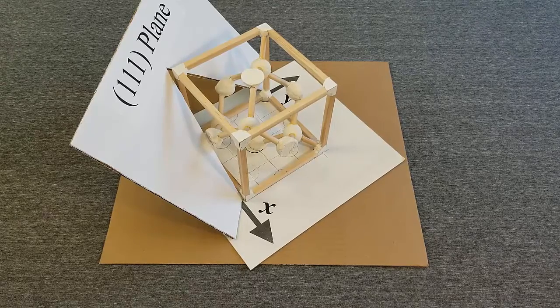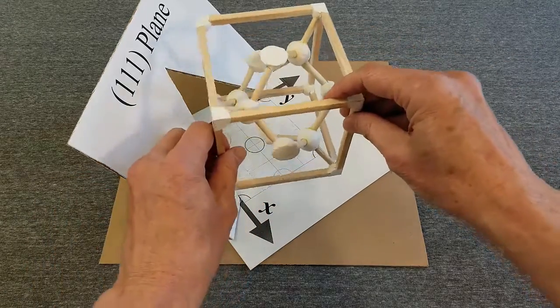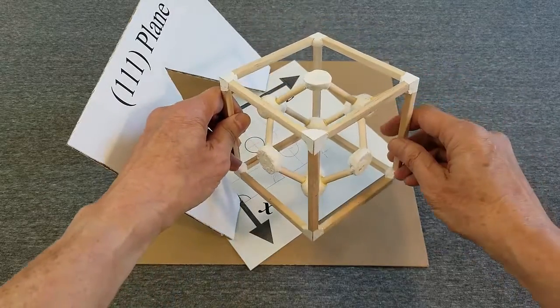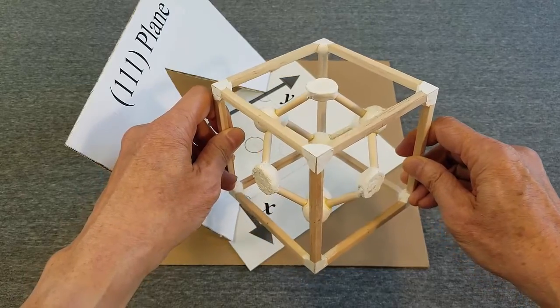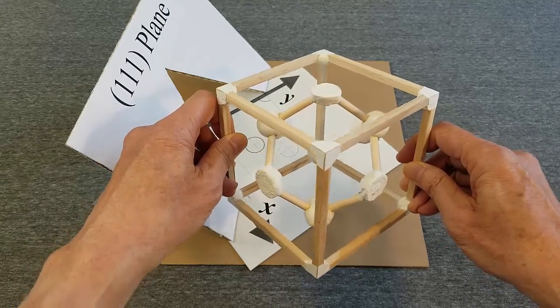Let's look in the 1-1-1 direction by lining up two diagonally opposite corners. Now the atoms are arranged in a hexagonal pattern.